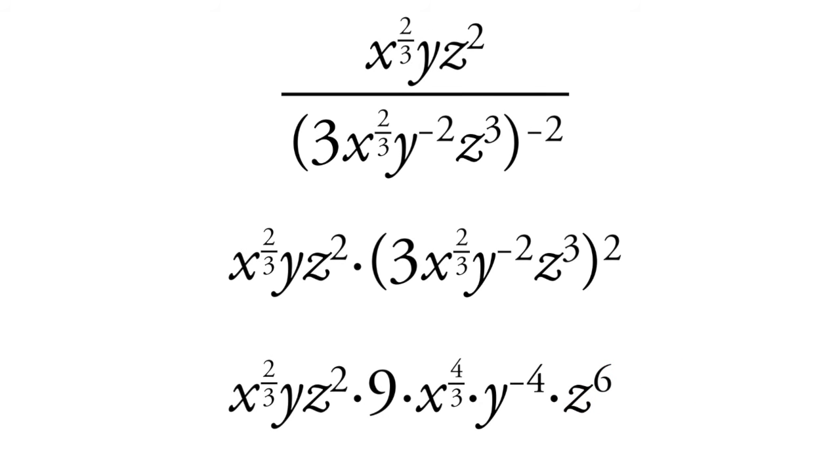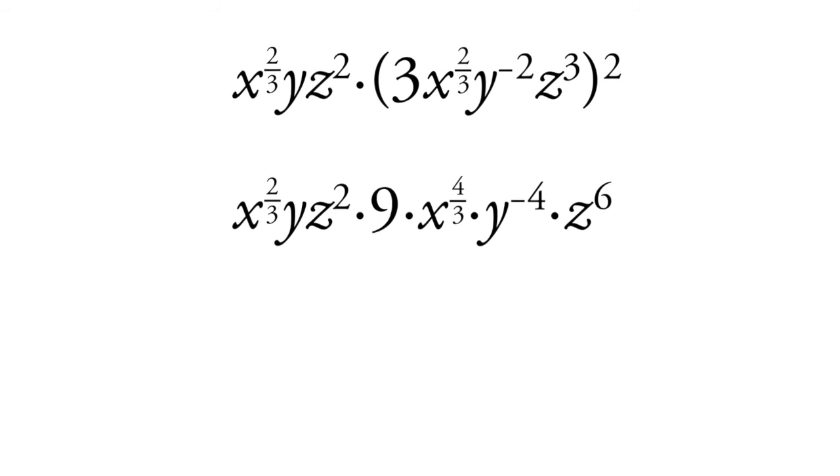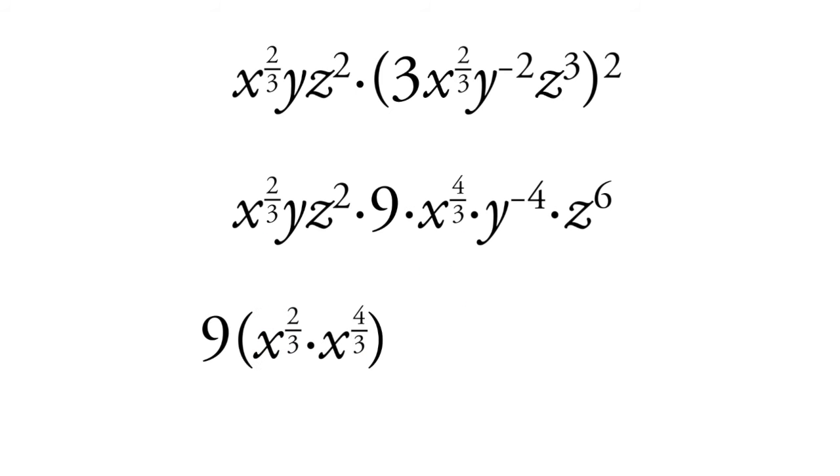So now we have to multiply it all out. We'll take the constant here, this 9, and bring it to the front like this. And now we have x to the 2 thirds plus 4 thirds. And 2 thirds plus 4 thirds is 6 thirds, and 6 thirds is 2. So we have 9x squared.